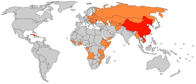An economic system can be considered a part of the social system and hierarchically equal to the law system, political system, cultural system, and so on. There is often a strong correlation between certain ideologies, political systems and certain economic systems — for example, consider the meanings of the term communism. Many economic systems overlap each other in various areas; for example, the term mixed economy can be argued to include elements from various systems. There are also various mutually exclusive hierarchical categorizations.